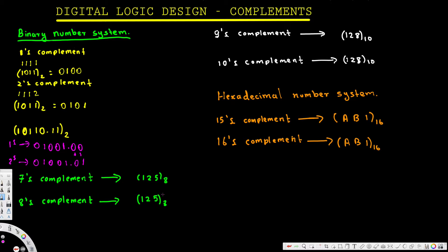Now here we have a seven's complement example. To find the seven's complement, just like one's complement uses one-one-one, seven's complement uses seven-seven-seven and we subtract. Seven minus five is two, seven minus two is five, seven minus one is six — so six-five-two is the seven's complement. For the eight's complement, we just add one to the last digit of the seven's complement, giving us six-five-three.